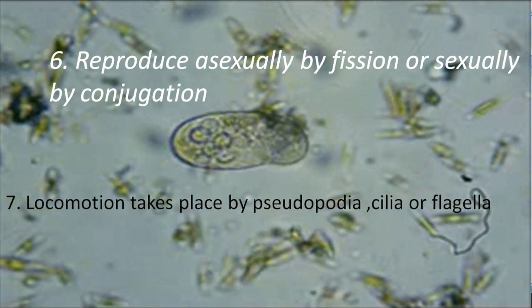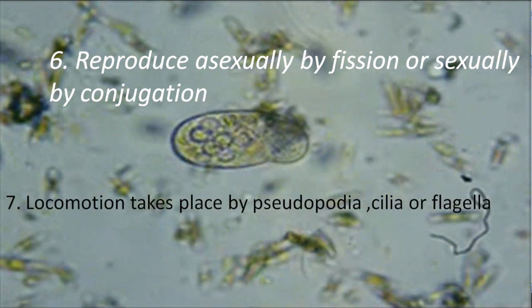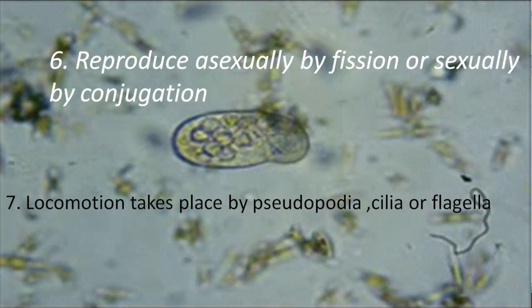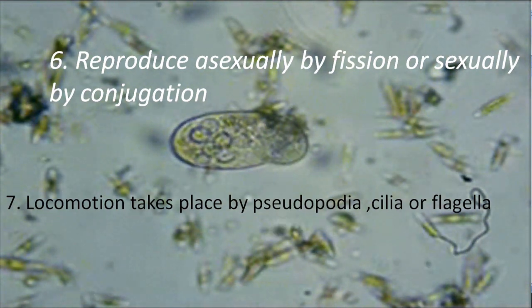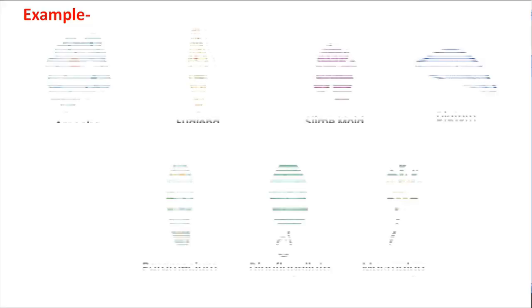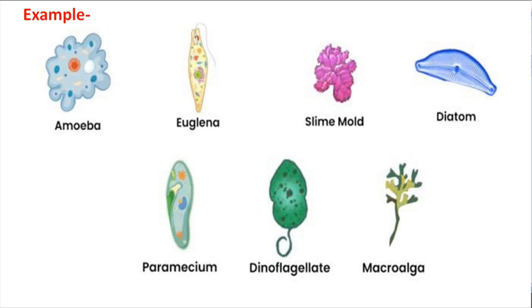Locomotion takes place by pseudopodia, cilia, or flagella. Examples are: amoeba, euglena, slime mold, diatom, paramecium, dinoflagellate, and macroalgae.